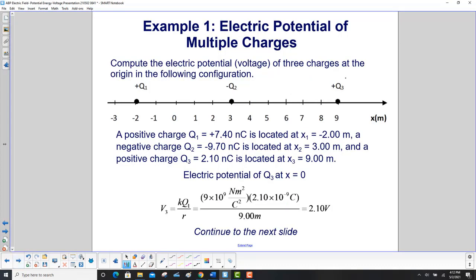Finally, we calculate the voltage due to Q3. This time we have a positive charge, so we're going to get a positive voltage. That's nine meters away from the origin, and we get 2.10 volts.